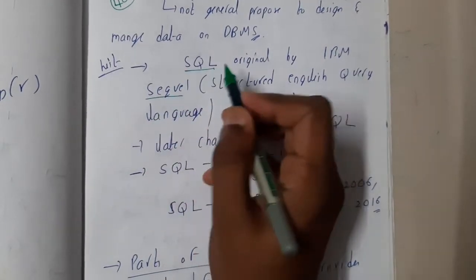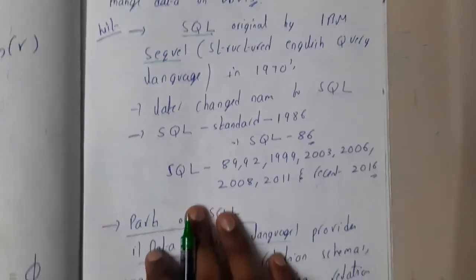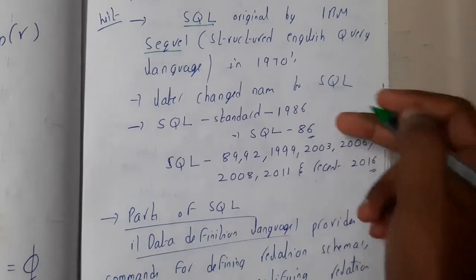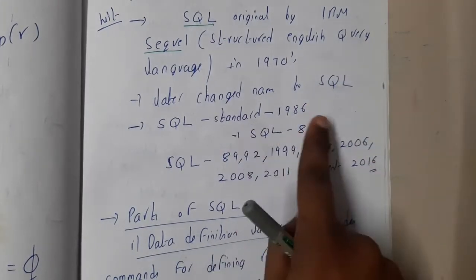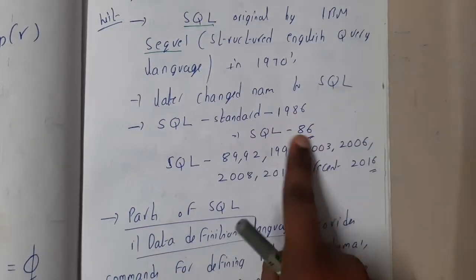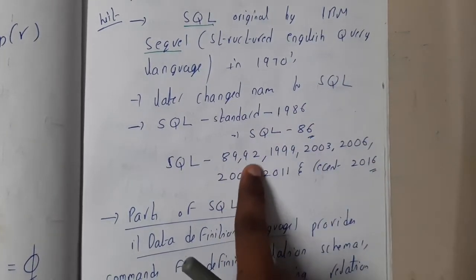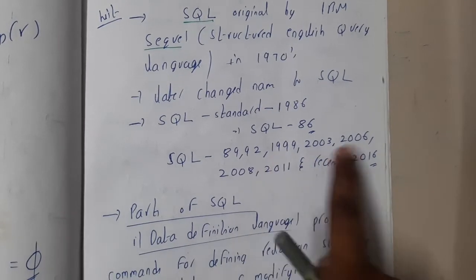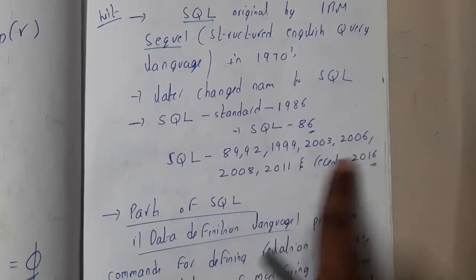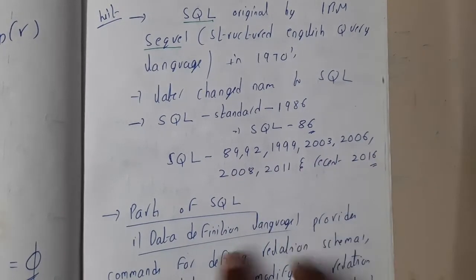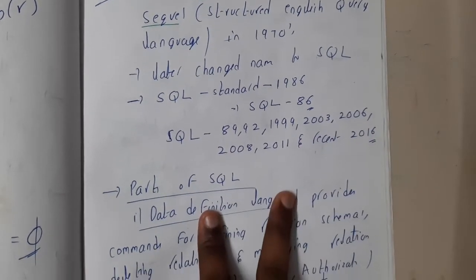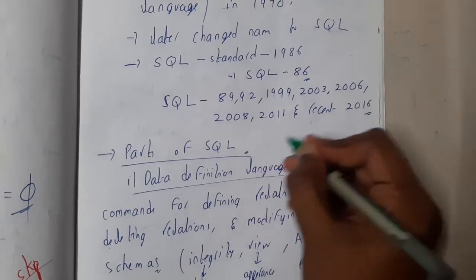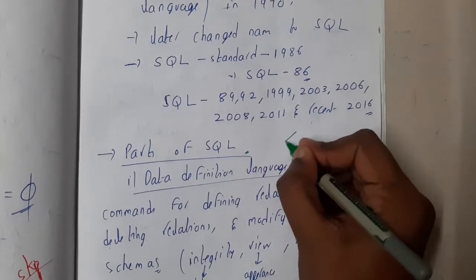Standard versions of SQL have been released regularly. Notable versions include 1986, 1989, 1992, 1999, 2003, and the most recent one being 2006.